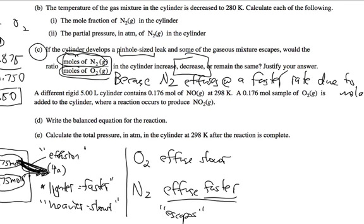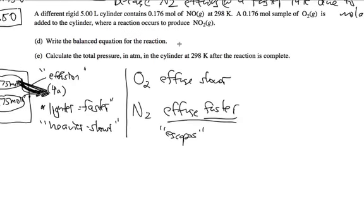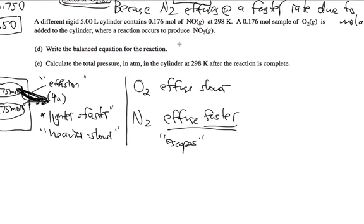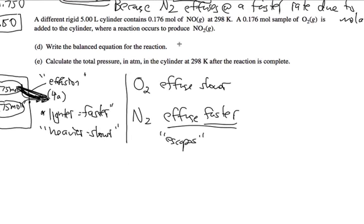All right, let's look at this next problem. D and E is dealing with a different container, so I'm actually going to go down here. So 4D. A different rigid container, it's five liters, contains 0.176 moles of NO at 298 Kelvin. 0.176 moles of O2 is added to the cylinder, and it produces NO2. So D, write a balanced equation for this reaction.